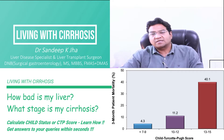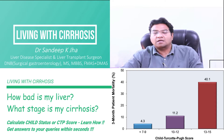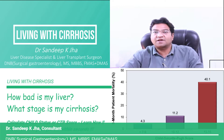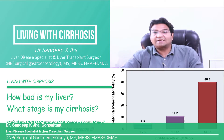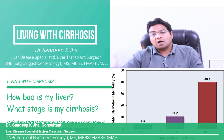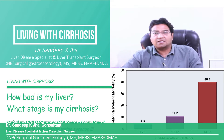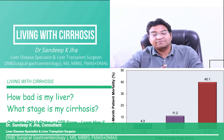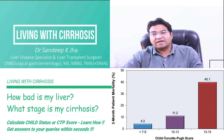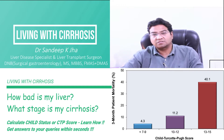Today we are going to discuss the Child-Pugh Score Calculator. It is a scoring system that helps you determine the severity of cirrhosis, the mortality risk, or the risk to your life if you have cirrhosis. There are a few blood parameters and a few clinical parameters in the scoring system. Previously we have discussed the MELD scoring system, or Model for End Stage Liver Disease, which is another scoring system used in cirrhosis.